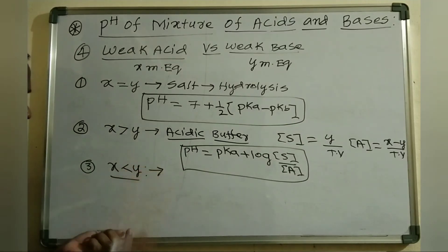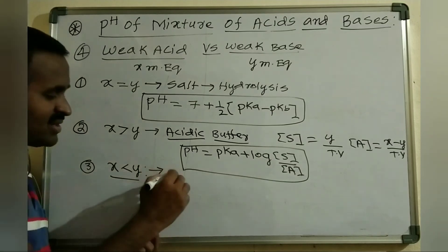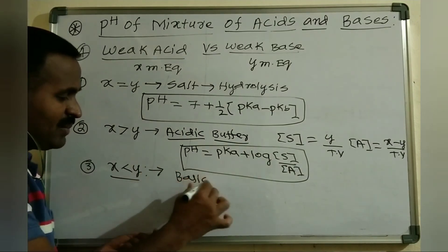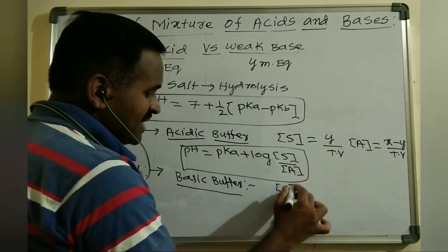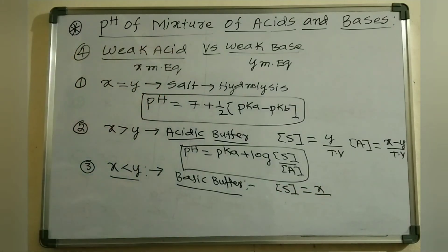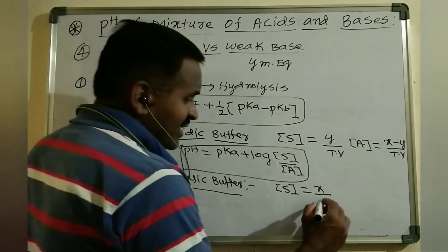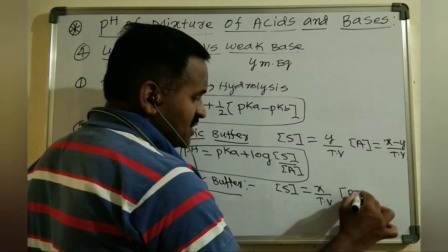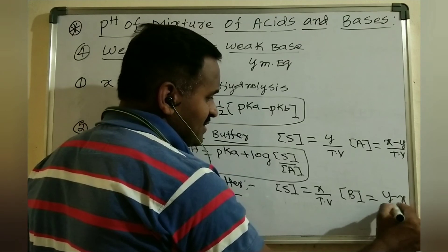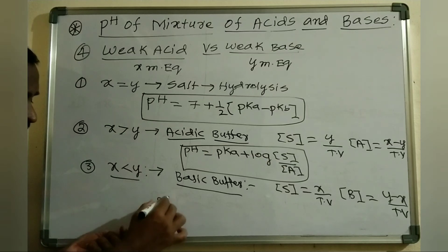Case 3: X less than Y — milliequivalents of weak acid is less than milliequivalents of weak base. A basic buffer is formed. The salt concentration equals X divided by total volume, because the weak acid is completely consumed as the limiting reagent. The base concentration equals (Y minus X) divided by total volume.